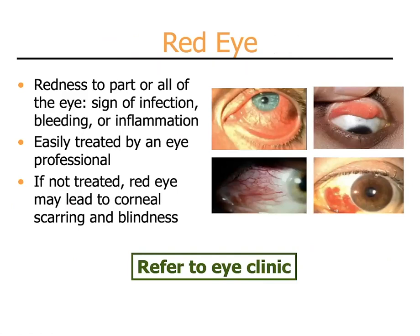Red eyes are common. It is very difficult to tell the cause of a red eye just by looking at it. Some common causes are infections, bleeding, or inflammation. While these may be easily treated by an eye professional, it can be very difficult for the primary care provider to determine what is causing the red eye. If not treated, some red eyes may lead to corneal scarring or blindness. Therefore, it is usually recommended to refer all red eyes to an eye clinic.